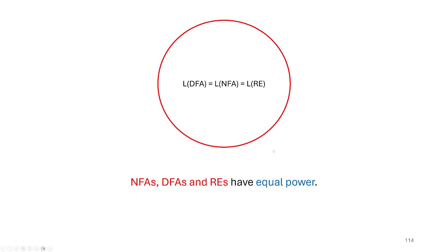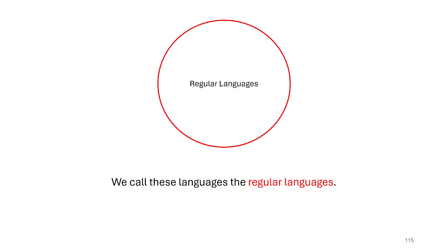So what this construction allows us to do is show that we can create an NFA for every regular expression and a regular expression for every NFA. That means these three models of computation — deterministic finite automata, non-deterministic finite automata, and regular expressions — all have equal power for describing or detecting membership in a language, and we call these languages the regular languages. That's it for this video, thanks for watching.